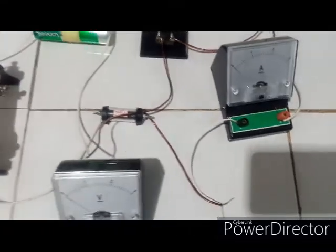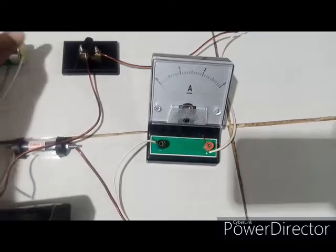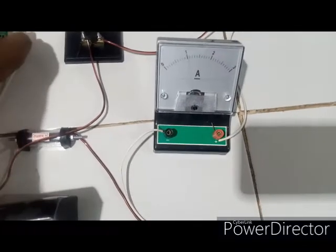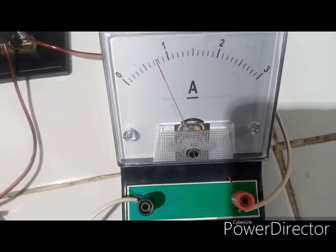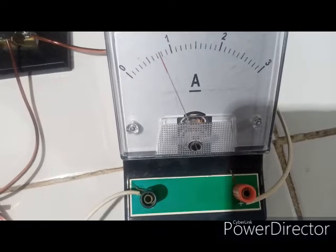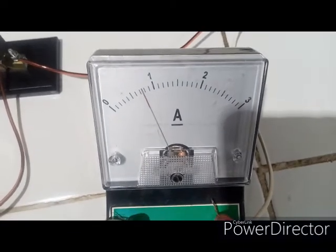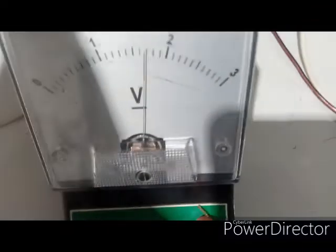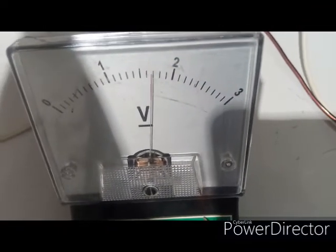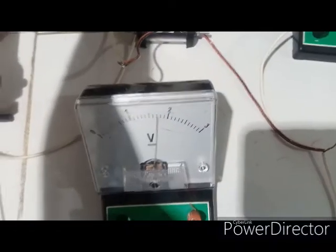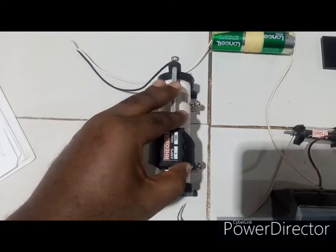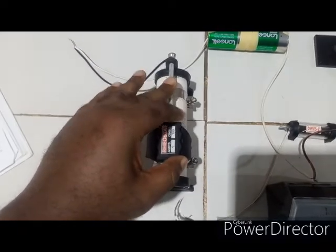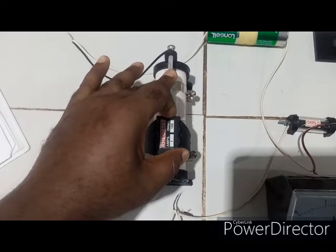So the maximum reading from the ammeter could be gotten here. So here is the maximum reading that is 0.75 approximately and the corresponding reading of the voltmeter is 1.7. So I'm going to take note of that. So since the maximum current is from this end, I will now have to reduce it a bit so that I will get a reduced current value.